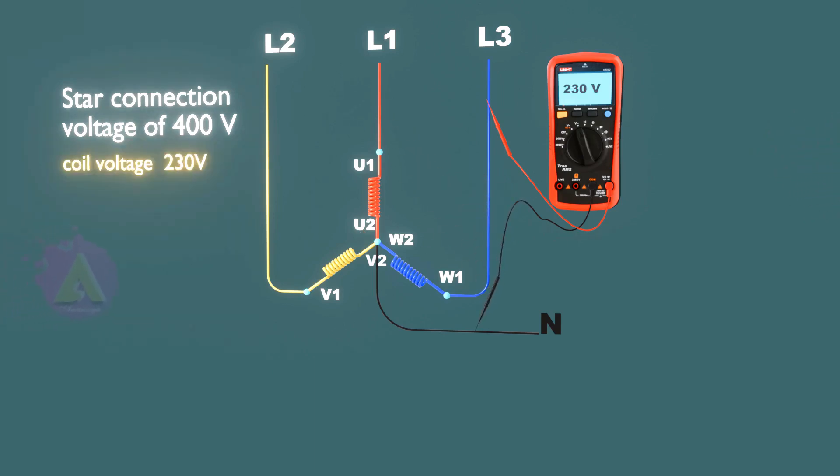That's because the phase is not directly connected to two coils like in the delta configuration. One end is connected to a phase and the other end is connected to a shared point, so the voltage is therefore shared. The voltage is less as one phase is always in reverse. We can calculate this: 400 volts divided by the square root of 3, which is 230 volts.